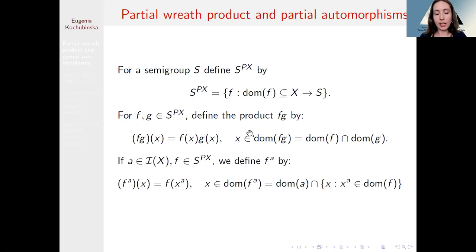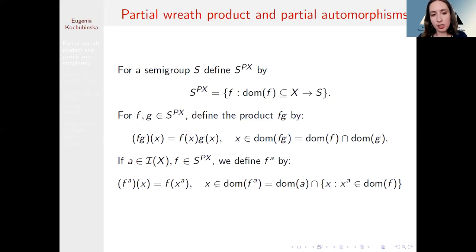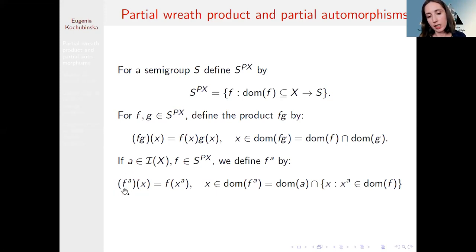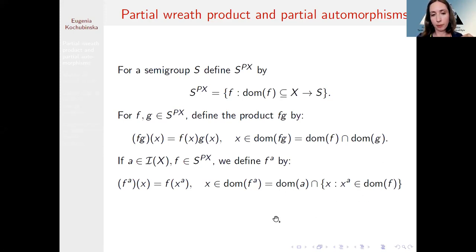The product is defined by a rule you can see on the screen, and we have to pay attention to the domain of the product. For the element a from the set of all partial bijections of X — which I denote as the inverse symmetric semigroup acting on X — we define a function fa by the rule: fa of x is the action of function f on element x under the action of the partial bijection a, where x belongs to the domain of fa.